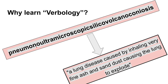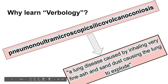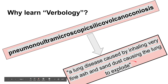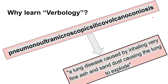'Pneumo' is where 'lung' comes into play. 'Ultra' meaning very or extremely. 'Microscopic' makes sense because we're talking about very fine ash or sand dust. 'Sili' — not S-I-L-L-Y but S-I-L-I — is actually silicone and sand, which makes silicone. 'Volcano' makes sense because this condition will cause the lungs to explode. And again, 'osis' is a medical condition.